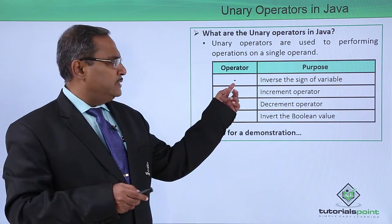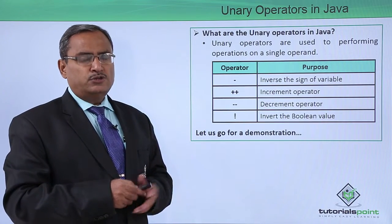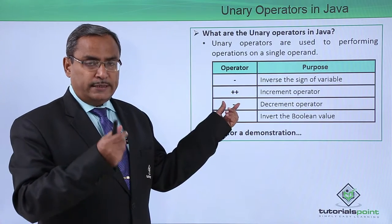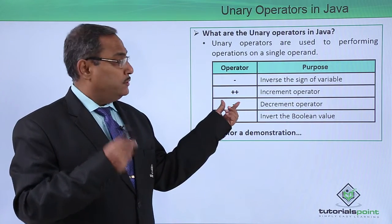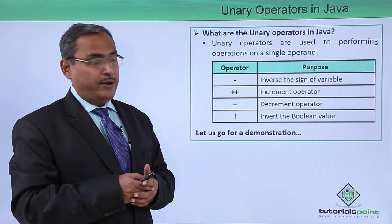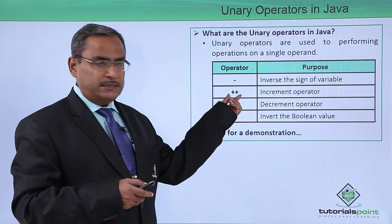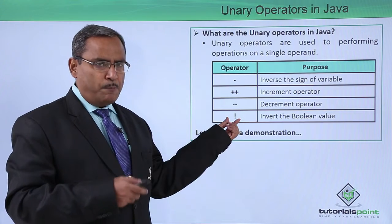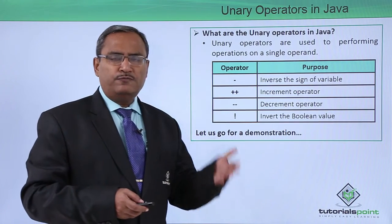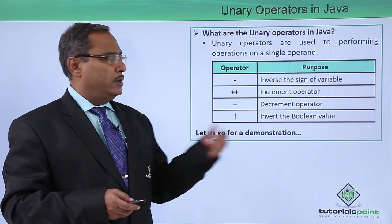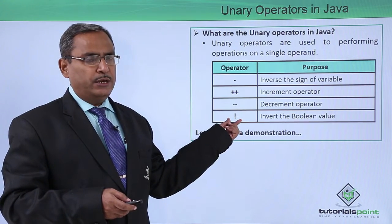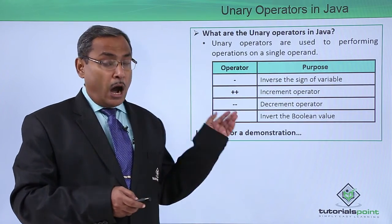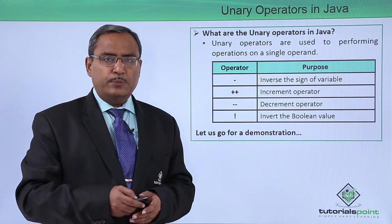The unary operators include the minus operator, which inverts the sign of a variable — so minus myVar changes the sign, using only one operand. We also have plus-plus, the increment operator, minus-minus, the decrement operator, and the exclamation mark, the complement operator, which inverts a boolean value from true to false and from false to true. Let us go for a demonstration to show how these operators are used in Java code.